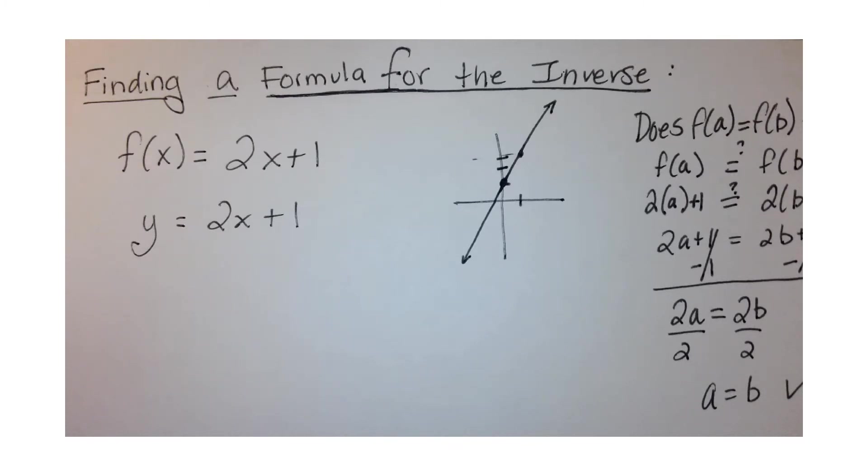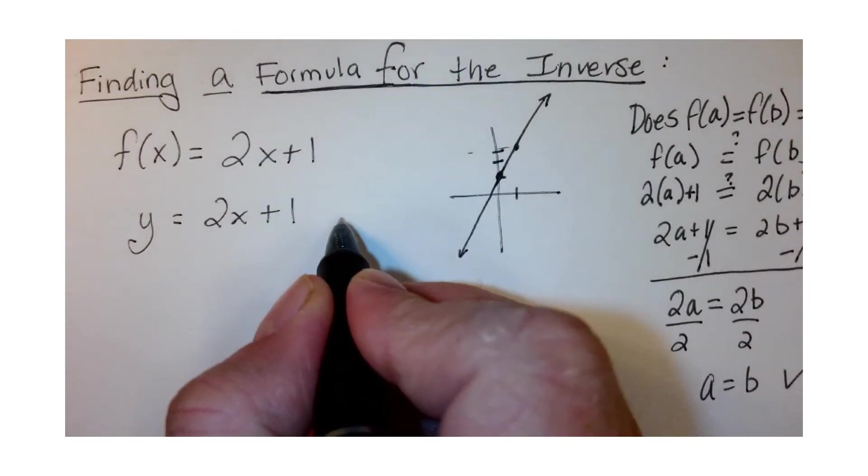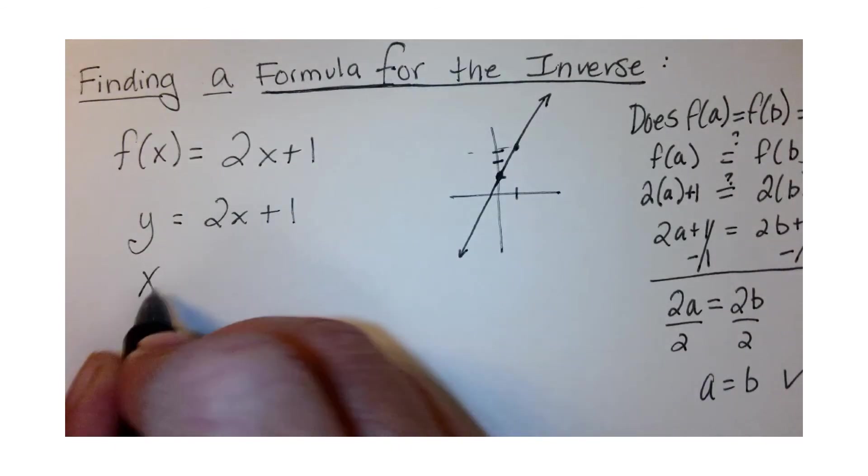So those x and y values are swapping, and because they are swapping, we're going to swap them here. So this is y = 2x + 1; now we're going to make that x = 2y + 1.